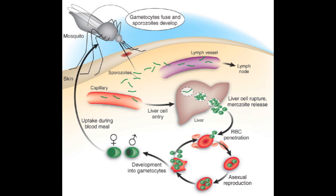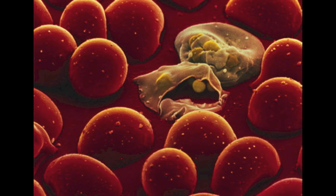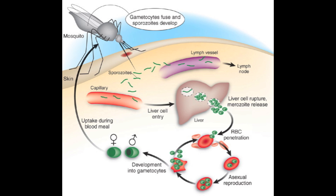Here's a diagram of falciparum plasmodium's life cycle. The infection can be split into two stages. The first is the asymptomatic stage, which involves the asexual reproduction of sporozoites in the infected person's liver. This stage normally lasts around 15 days. From here, the infection moves on to infect the red blood cells, and when this happens, an immune response occurs, and a fever happens when the sporozoites come out of the liver.